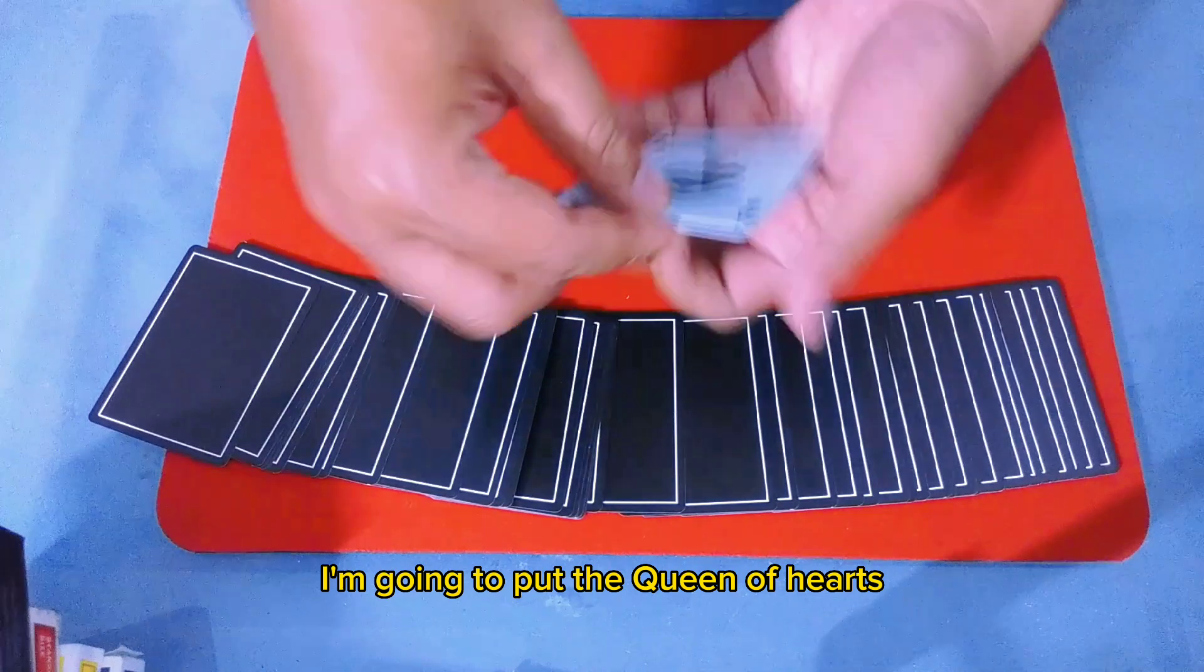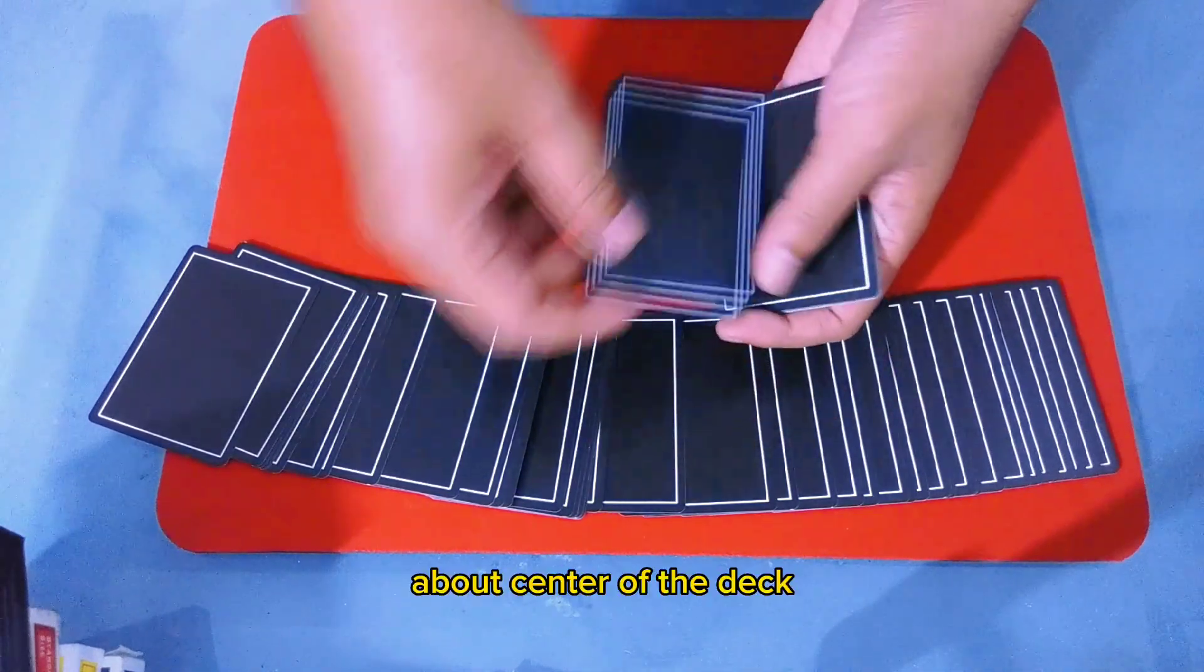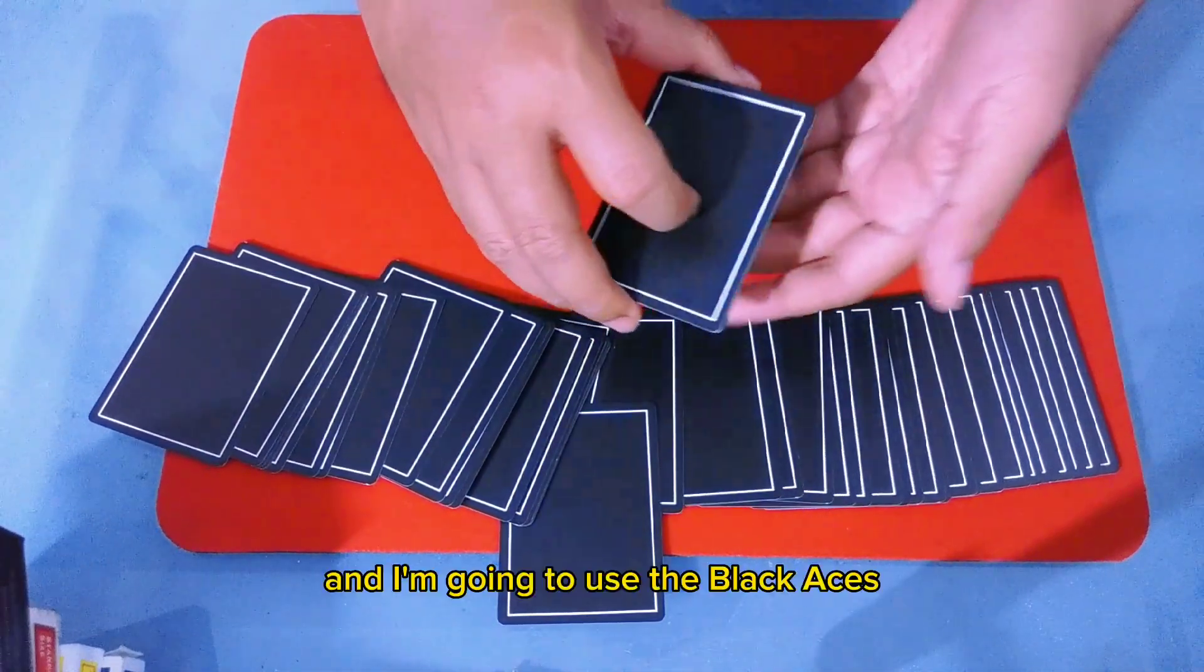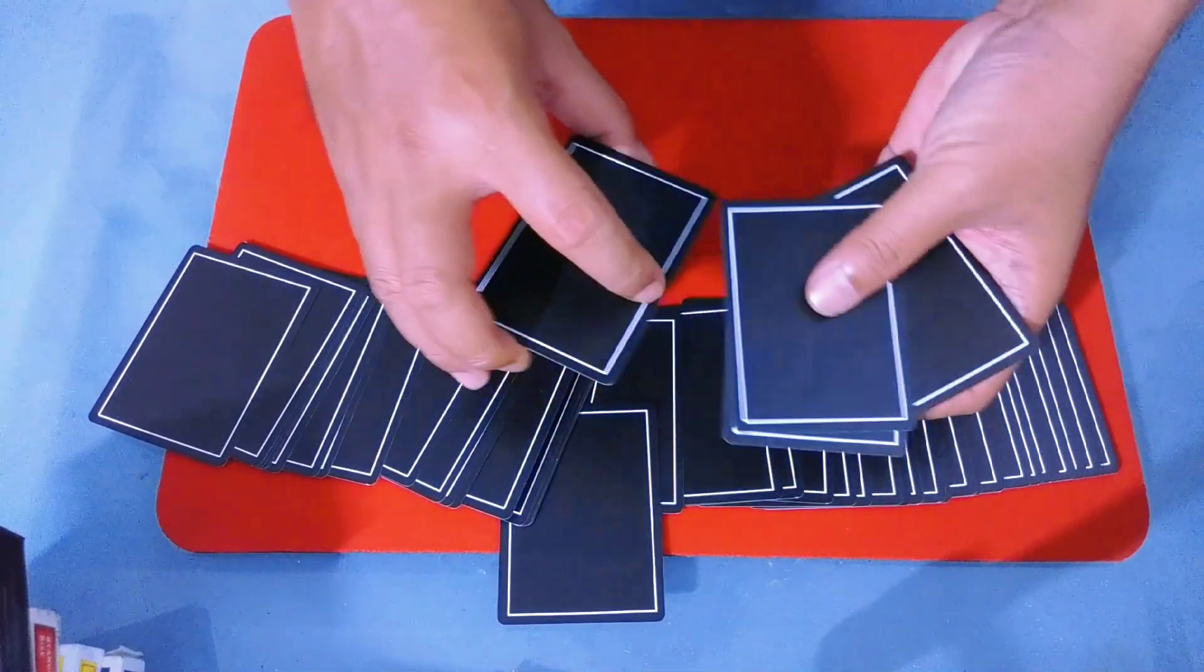Now I'm gonna put the Queen of Hearts about center of the deck, and I'm gonna use the black aces.